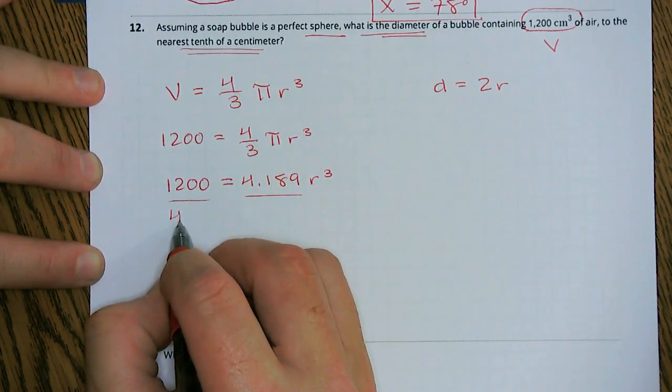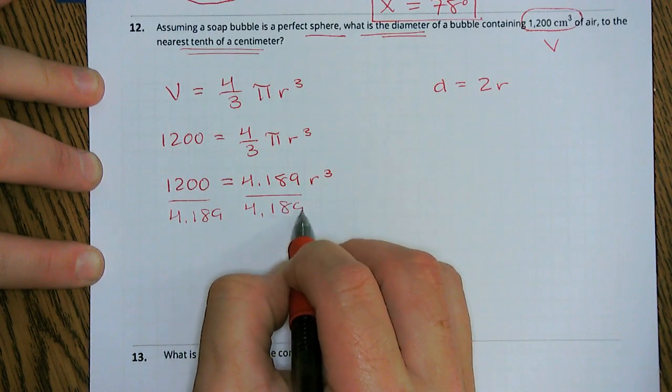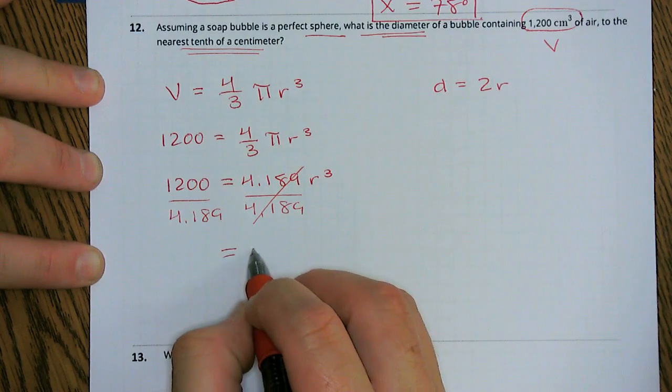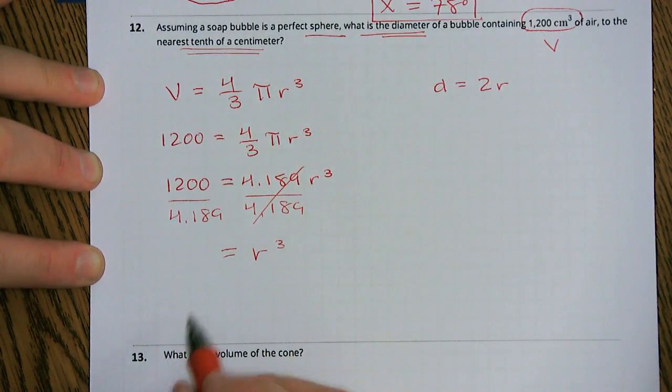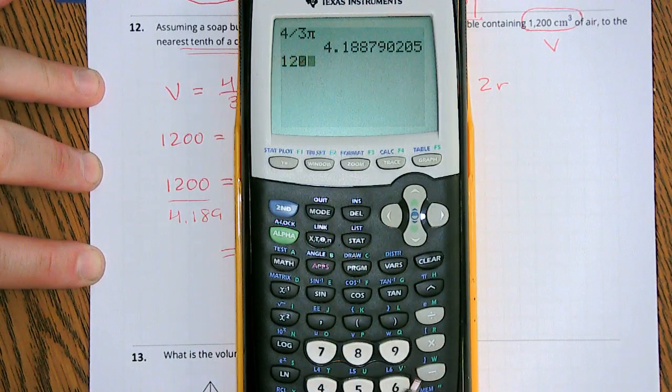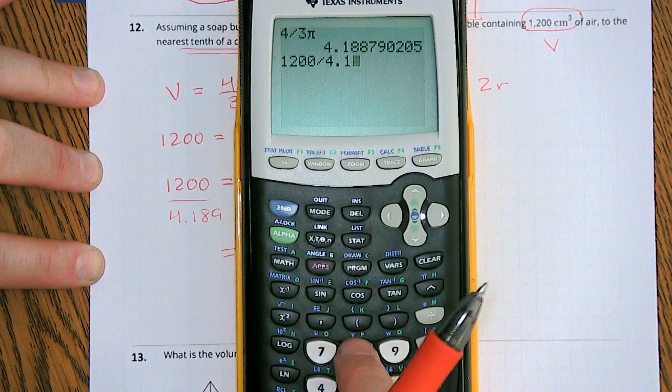So let's now get the r cubed term by itself because we need that r to get to the diameter. Divide both sides by that 4.189. So any number divided by itself is just a one, so that simplifies out. So that's our r to the third power. Now we have 1,200 divided by that number.